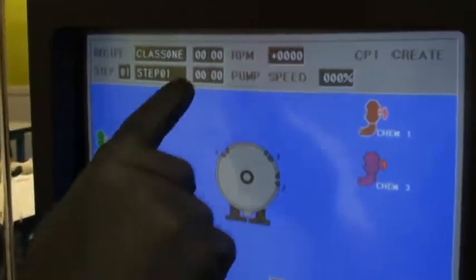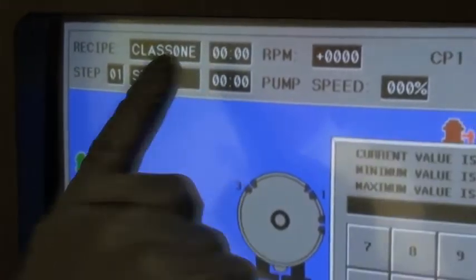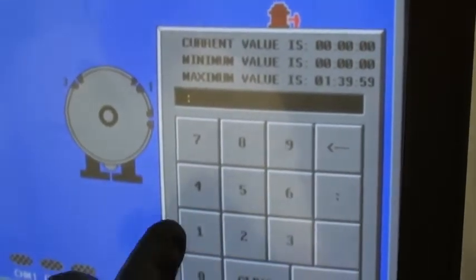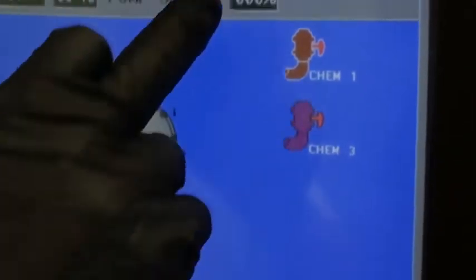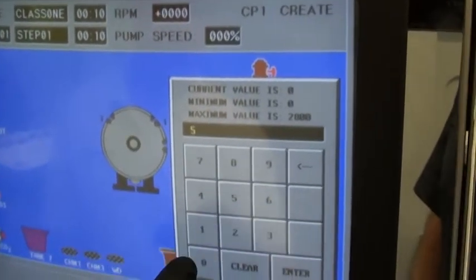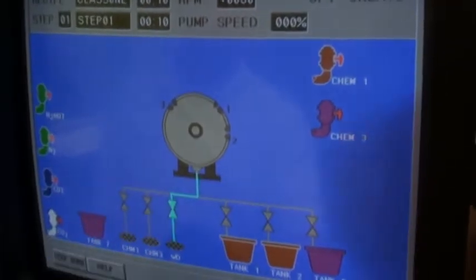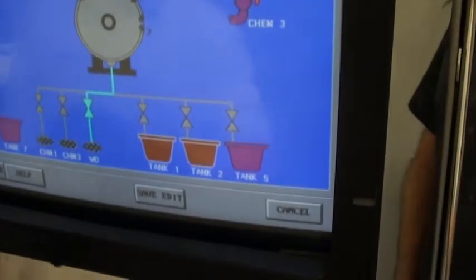This is step one. We'll put in our time, we'll just enter in 10 seconds for a ramp up. We'll do the RPMs 50, select the drain, we'll say step done.